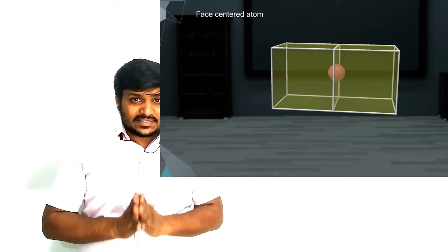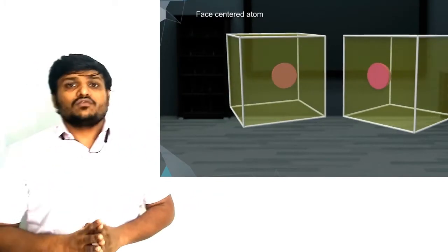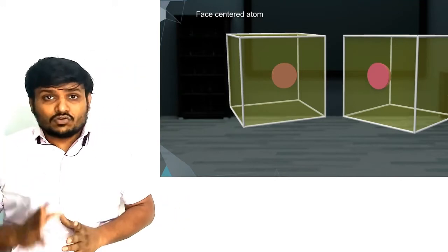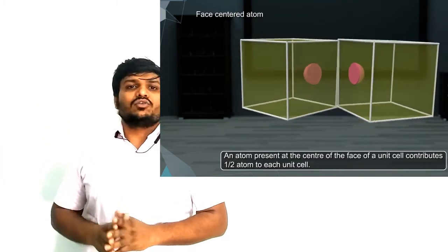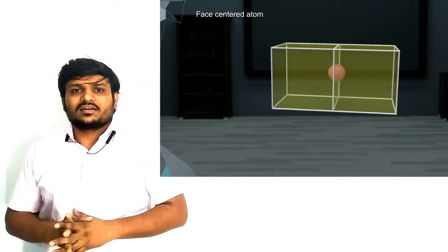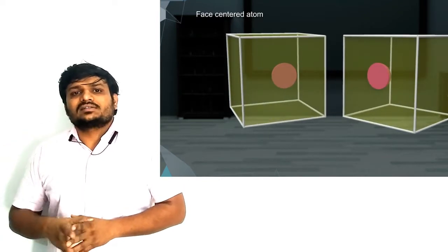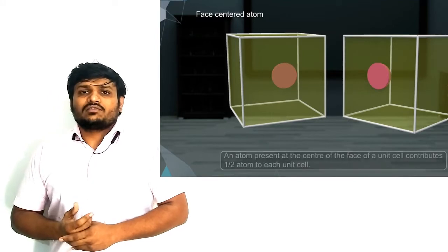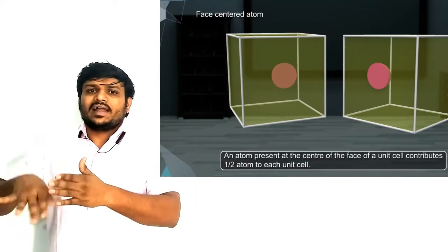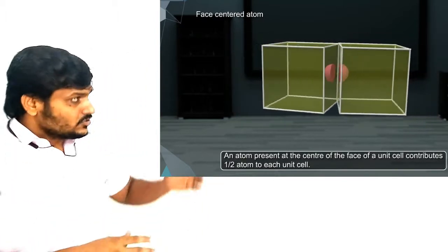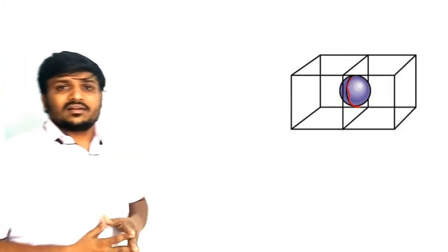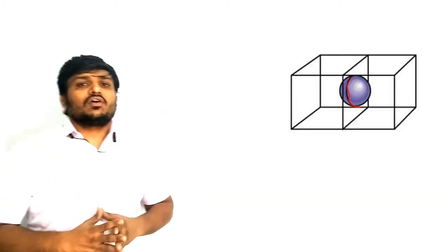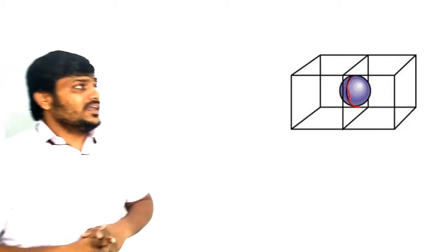If your atom is present on a face, you will get only half portion of that atom. The other half portion is given to the neighboring unit cell, because a face is shared between two unit cells. So if any atom is placed on a face, your unit cell will get only half of that atom.